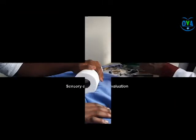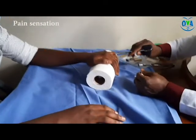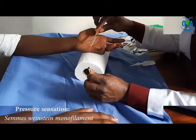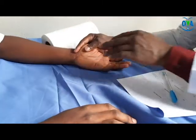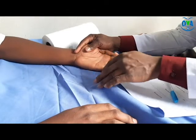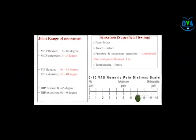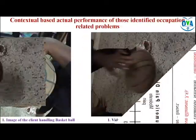The assessment focused on range of motion, sensory evaluation including touch, cutaneous pressure, pain, and the client's psychological pain response. The contextual performance of those identified occupations shows the difficulties experienced by the client while performing those activities.